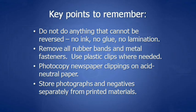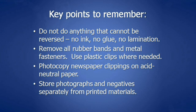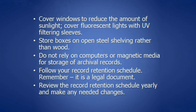Place light materials together in folders — for example, folder one: administrative council minutes for 2000; folder two: administrative council minutes for 2001. Label your folders with pencil. Place the folders in boxes and label the boxes. Now create a finding aid or inventory for each group of records. Here are some key points for caring for your records: do not do anything that cannot be reversed — no ink, no glue, no lamination. Remove all rubber bands and metal fasteners and use plastic clips where needed. Photocopy newspaper clippings onto acid-neutral paper. Store photographs and negatives separately from printed materials. Cover windows to reduce sunlight. Cover fluorescent lights with UV filtering sleeves if lights will be on for long periods.